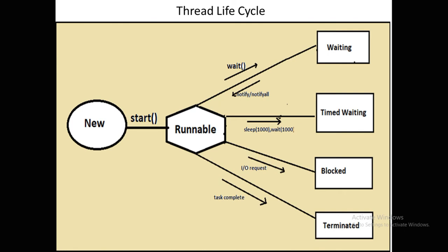The Blocked state generally happens with IO operations. Whenever you create a thread and that thread needs some information from a text file or any type of file, that operation requires an IO (Input/Output) object, and the thread will be blocked at that time. The thread waits until the IO operation is completed, then it comes back to the Runnable state. During that waiting period, the thread is in the Blocked state.